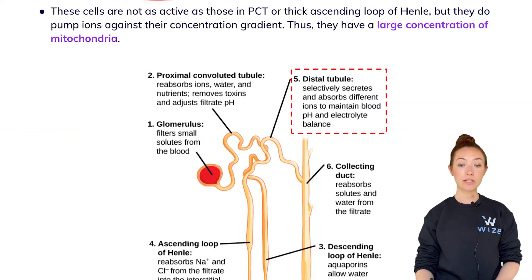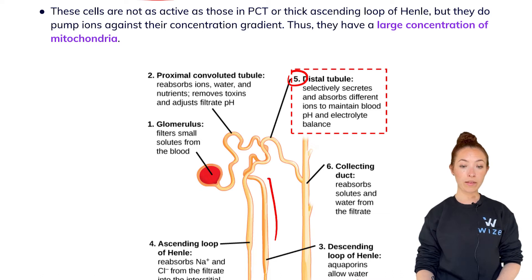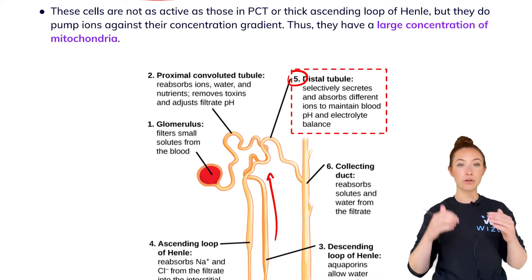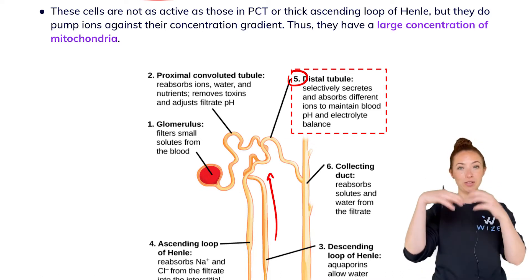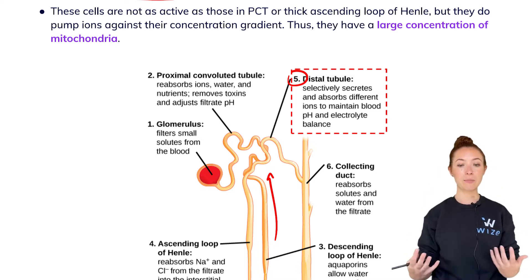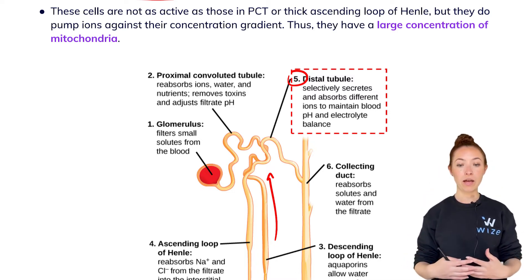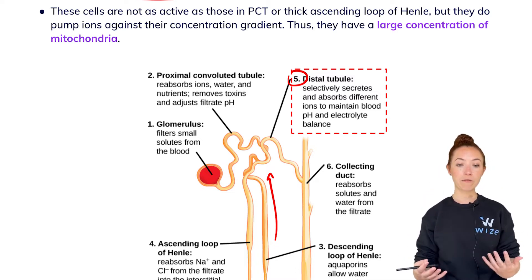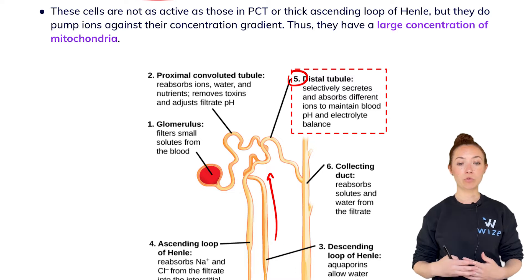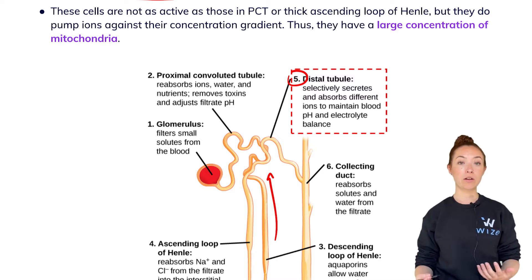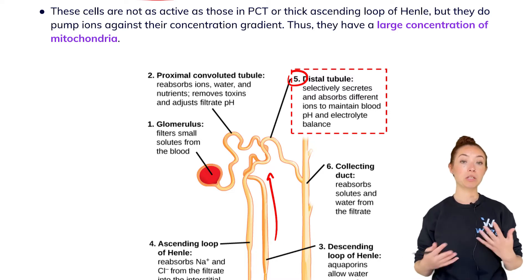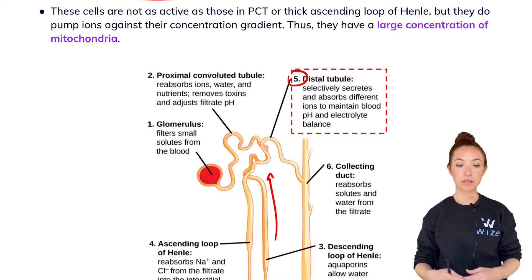The DCT comes right after the filtrate has come out of the loop of Henle. It goes into this other portion where the tube is kind of convoluted, and it's mainly responsible for secreting a few things and absorbing different ions to help maintain blood pH and electrolyte balance.